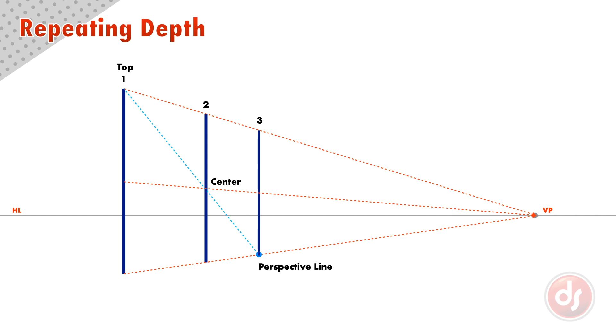To continue repeating the depth of these poles in space, we repeat the pattern moving forward. We draw a line from the top of the second pole through the center of the third to our perspective line, and that gives us the fourth pole. Then the top of the third pole through the center of the fourth gives us the fifth, and so on, all the way down.